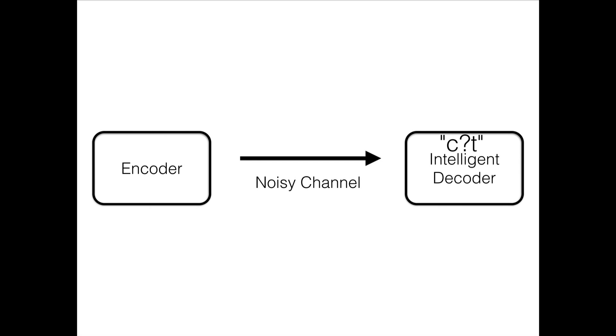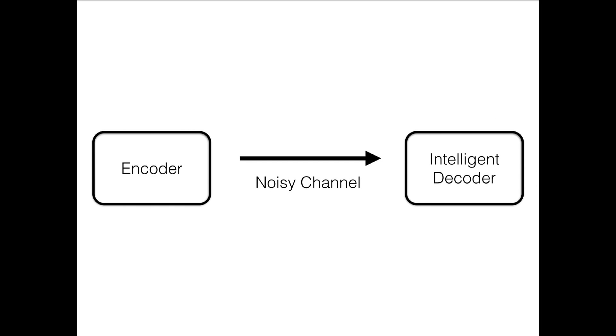The decoder knows the signal was corrupted and tries to reconstruct the intended word — it could be cat, cut, or caught. It might get it right, which is a communicative success despite noise, or think it's 'cut' and that's a failure. But if the encoder uses a longer word — say 'feline' — the corrupted message still carries more information for reconstruction. There's really nothing that can fill the corrupted position except 'e' to make it 'feline,' so the probability of correct reconstruction is close to one.